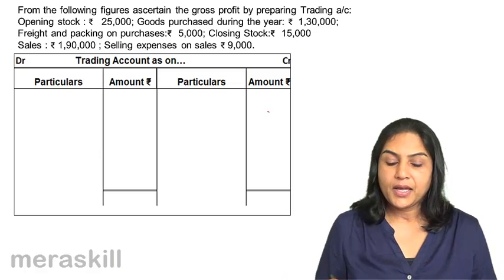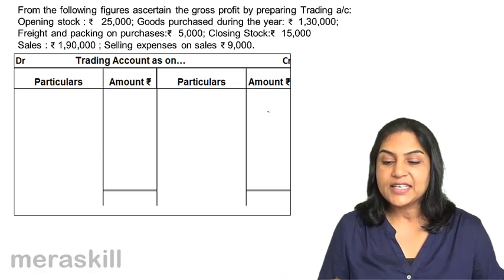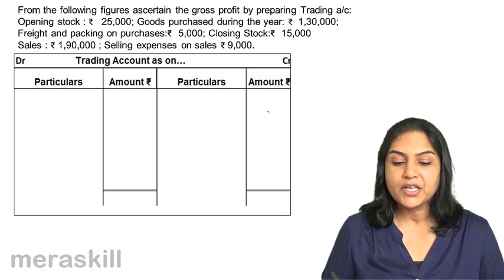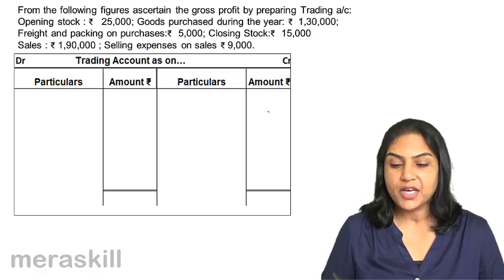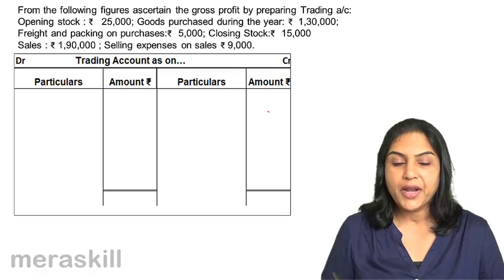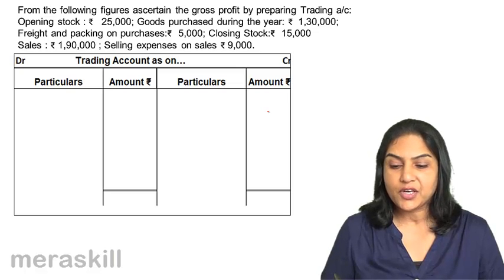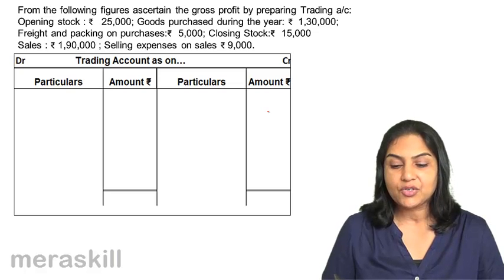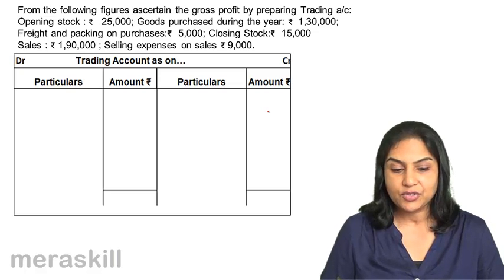From the following figures, ascertain the gross profit by preparing a trading account. Opening stock 25,000; goods purchased 1,30,000; freight and packing expenses 5,000; closing stock 15,000; sales 1,90,000; and selling expenses on sales 9,000.